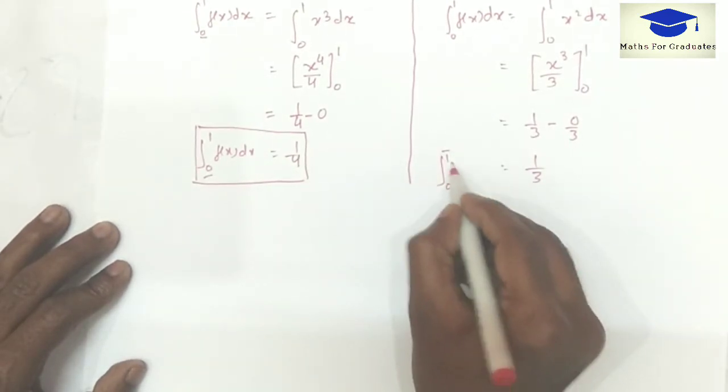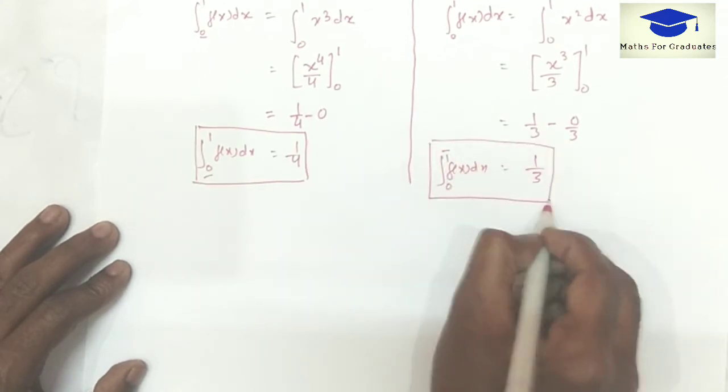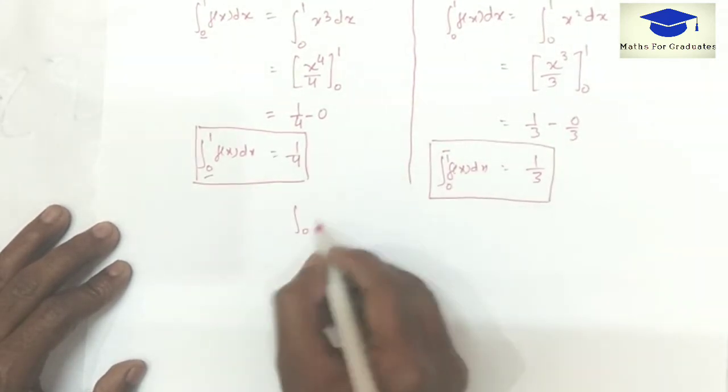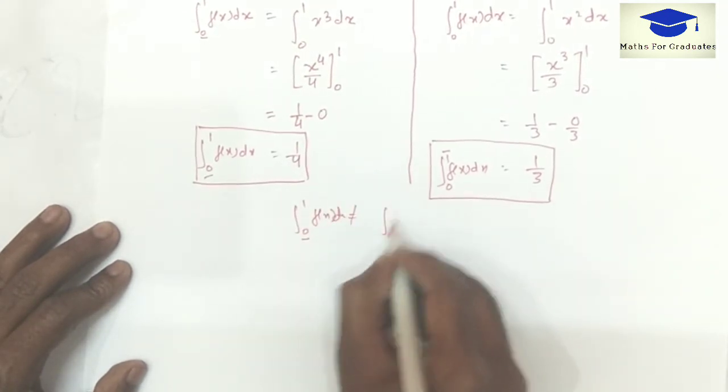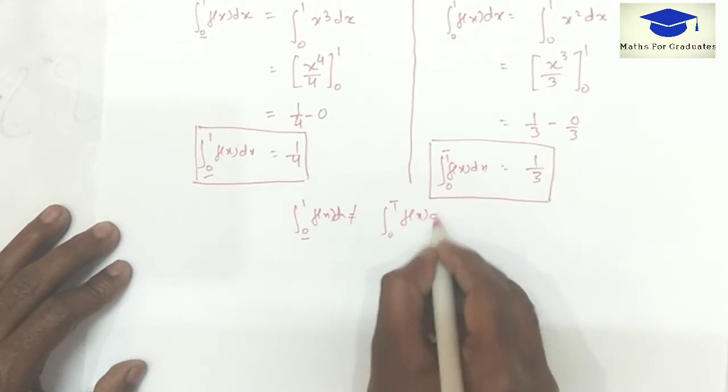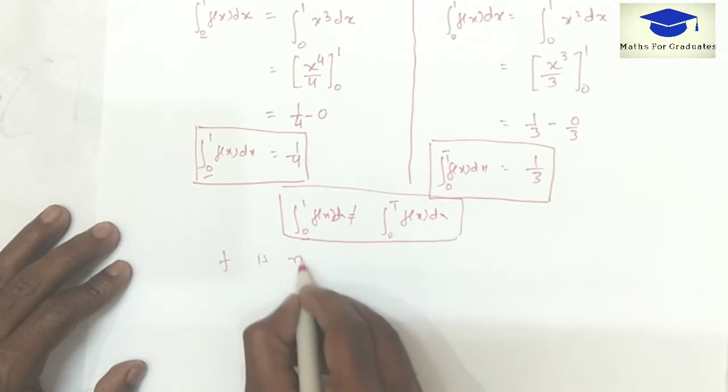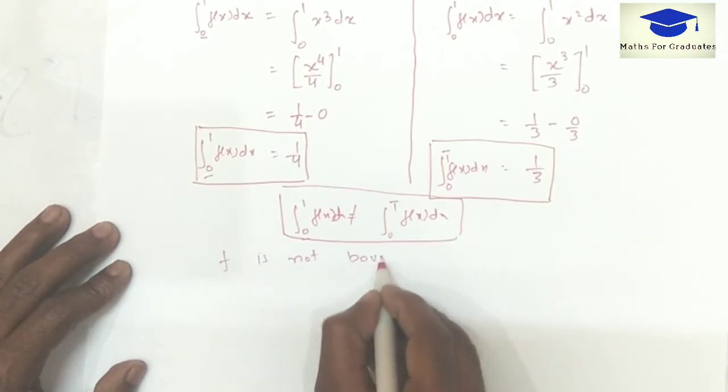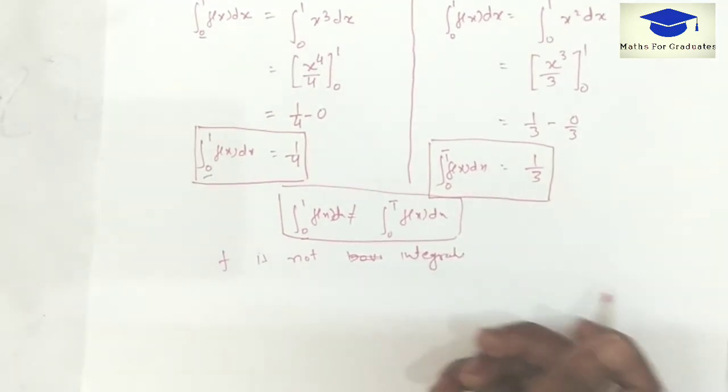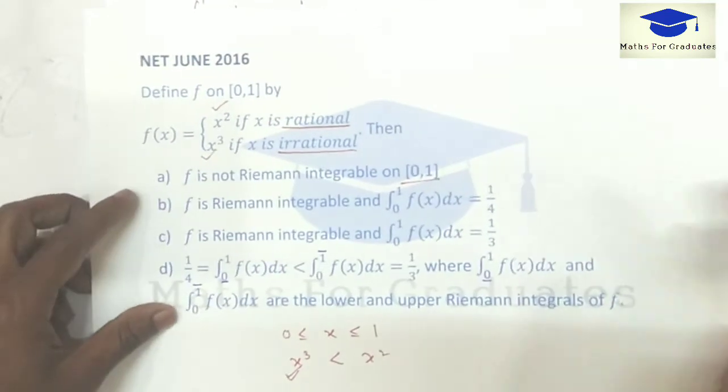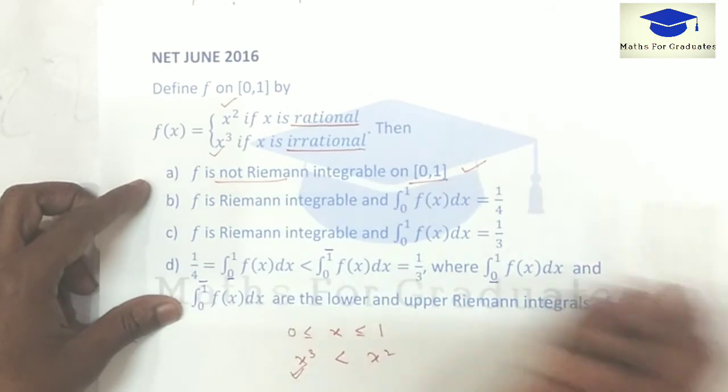Therefore upper Riemann integral will be 1 over 3. Now since lower Riemann integral is not equal to upper Riemann integral, hence f is not integrable. Therefore option A, f is not integrable, is correct.